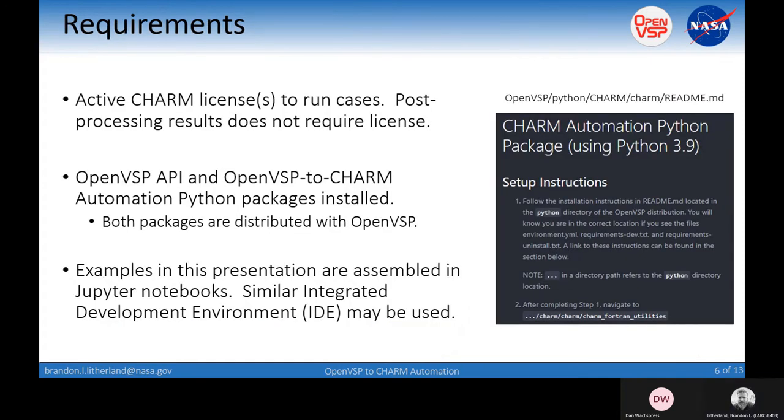So the requirements: if you want to run cases, you are clearly required to have a CHARM license. But again, the post-processing does not require this. You do need to have the OpenVSP API and the OpenVSP to CHARM automation Python packages installed. Both of these distributions are with OpenVSP, so you can simply build them. The examples are assembled in Jupyter Notebooks, which is highly recommended.